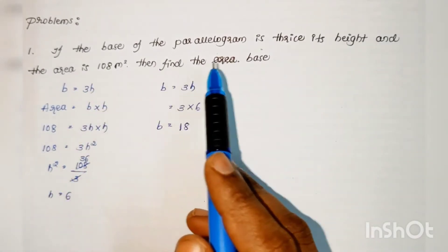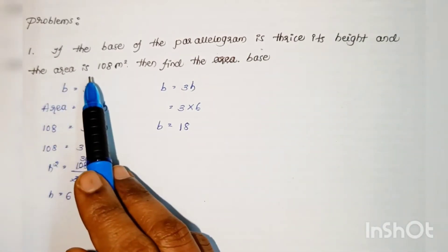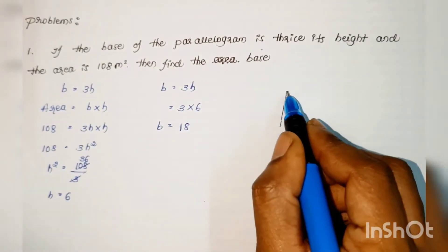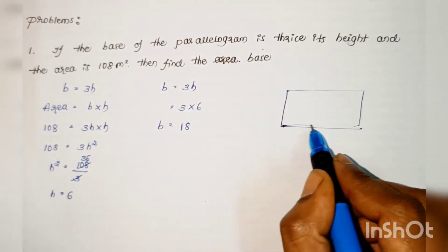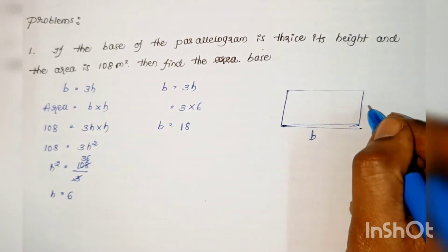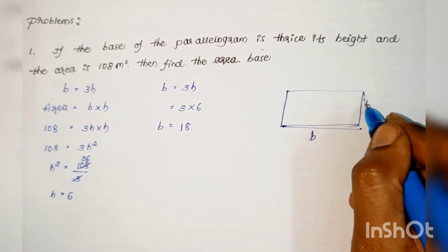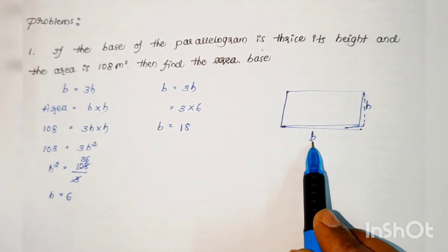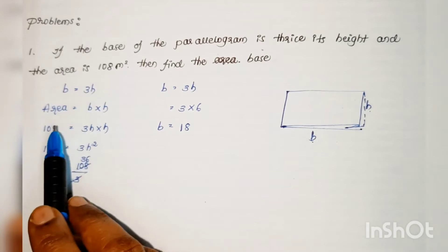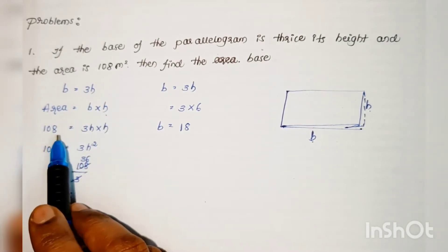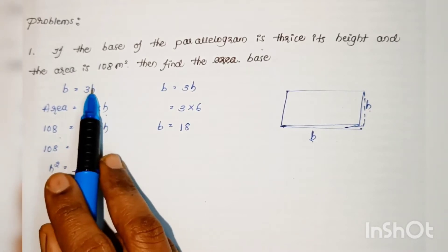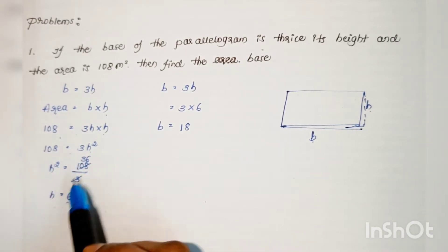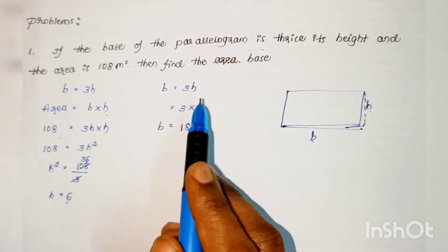Problem: If the base of a parallelogram is thrice its height and the area is 108 square meters, find the base. Since base = 3 × height, we substitute into area = base × height: 108 = 3h × h = 3h². Solving gives h = 6, so base = 3 × 6 = 18 meters.